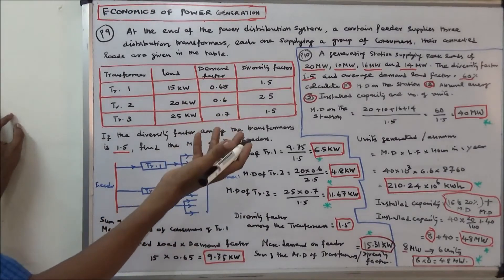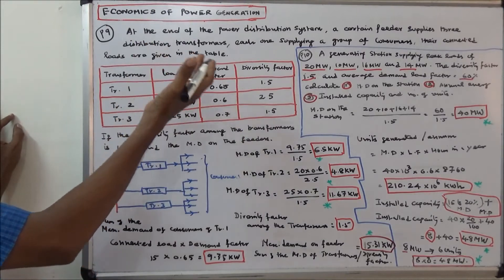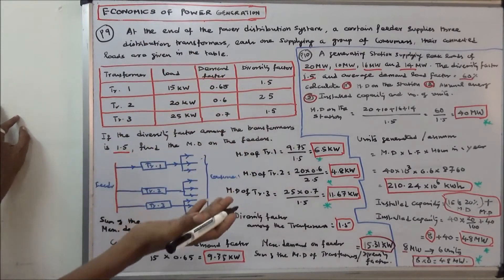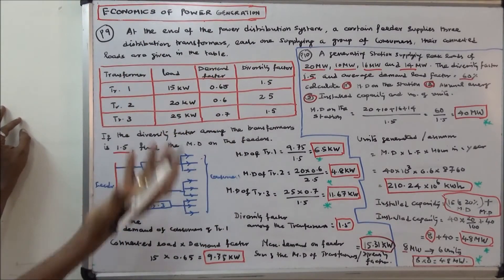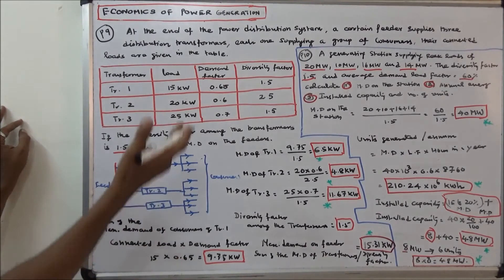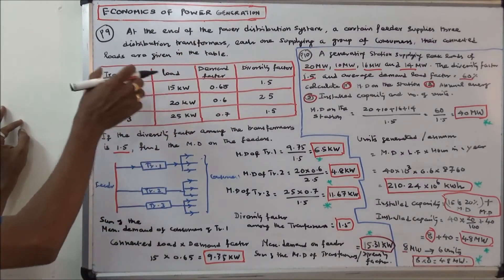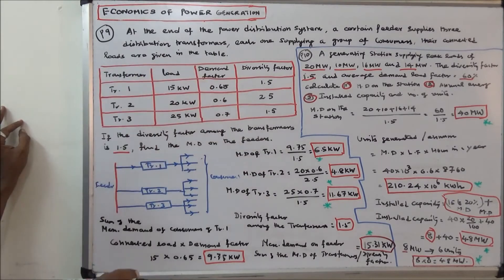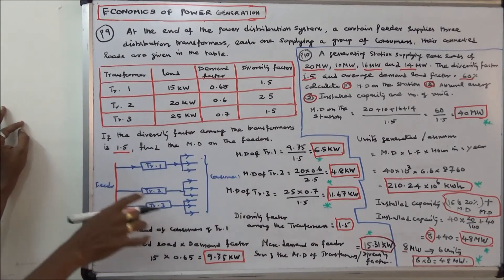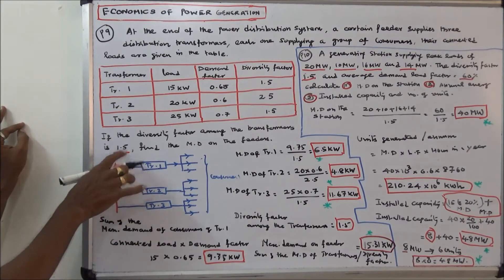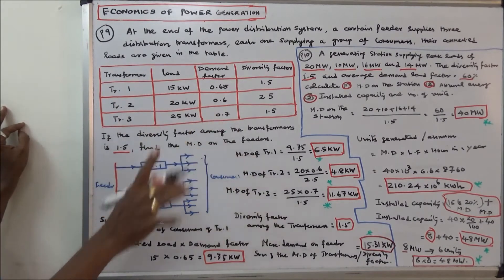This class works out four problems. The first problem: at the end of the power distribution system, a certain feeder supplies three distribution transformers, each one supplying a group of consumers. Their connected loads are given in the table. If the diversity factor among the transformers is 1.5, find the maximum demand on the feeder.